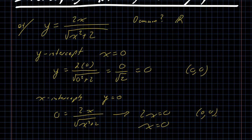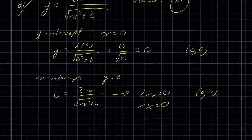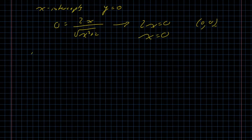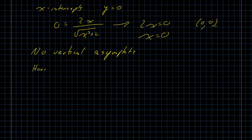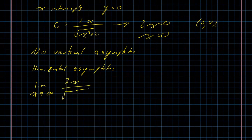Since the domain is all real numbers, we don't have to worry about vertical asymptotes. But horizontal asymptotes could still be a thing. There are no vertical asymptotes, but we can check for horizontal asymptotes by taking the limit as x goes to infinity of 2x over the square root of x squared plus 2. If we try plugging in directly, we get infinity over infinity, which is an indeterminate form.